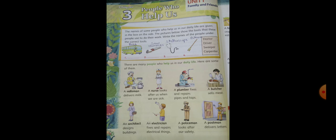Children, when you get up early in the morning, what do you do? You brush your teeth and your mother gives you milk. So from where does the milk come? The milkman delivers the milk. And when your mother prepares breakfast for you, the vegetables — from where have the vegetables come? Who grows the vegetables for you? The farmer grows the vegetables for you. Also, farmers grow food grains for you.